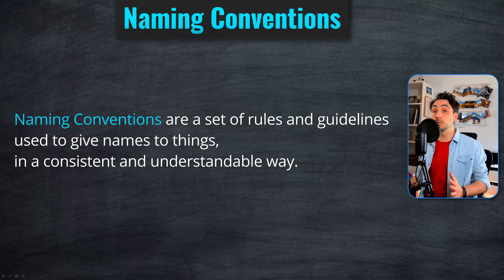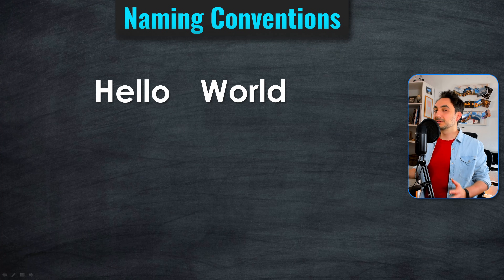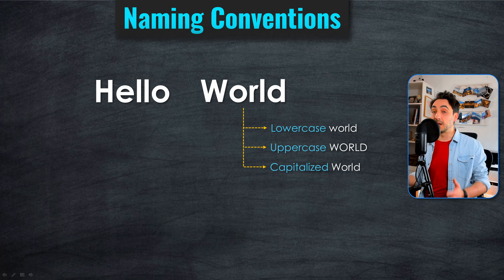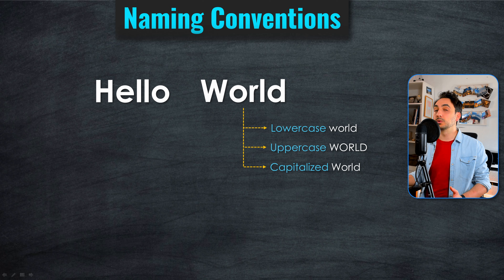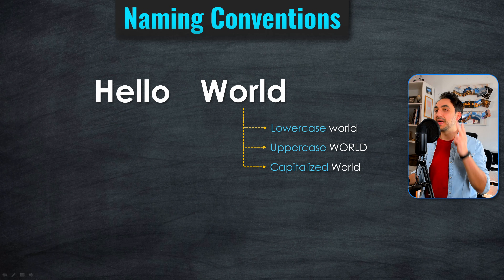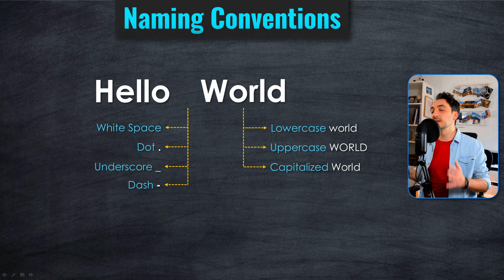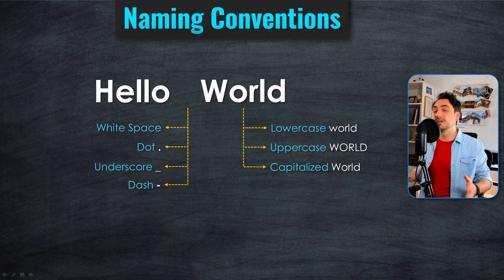Let's say we have the two words 'hello world.' To create a naming convention, we have to decide on two things. First, the word itself — how are we going to write it? We have three ways: we can use lowercase, uppercase, or capital letters. The second thing to decide is the separator between words. Between 'hello' and 'world,' we could use dots, underscore, dash, white space, or even nothing.